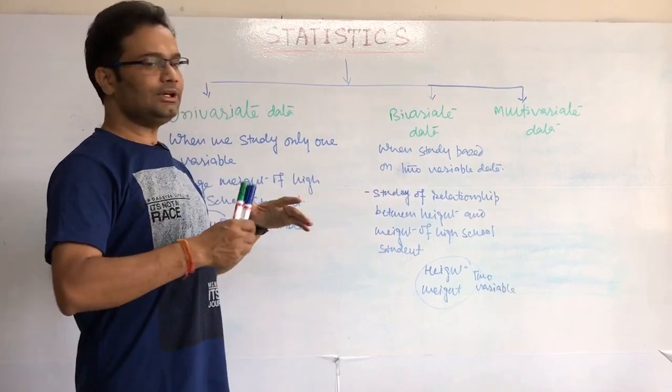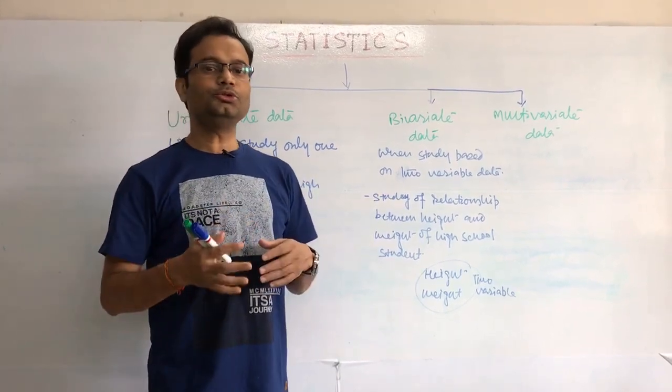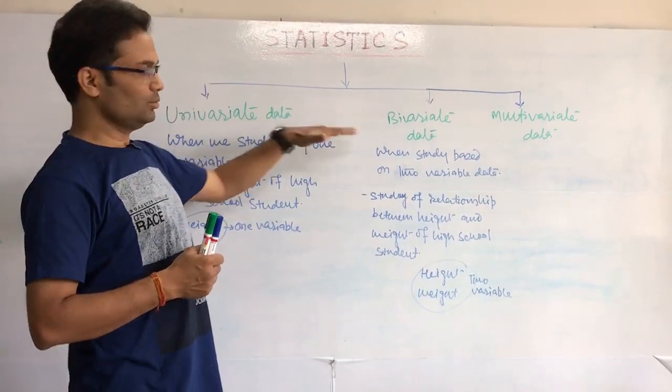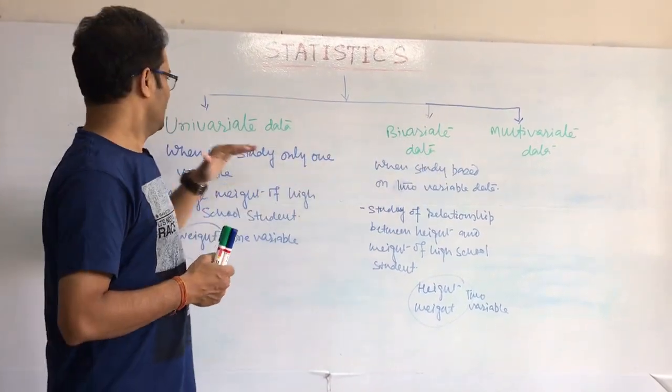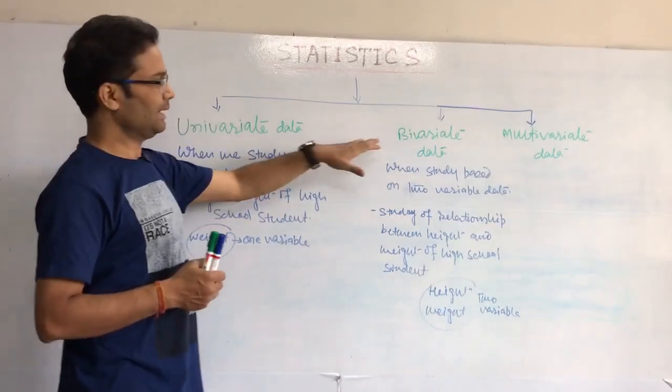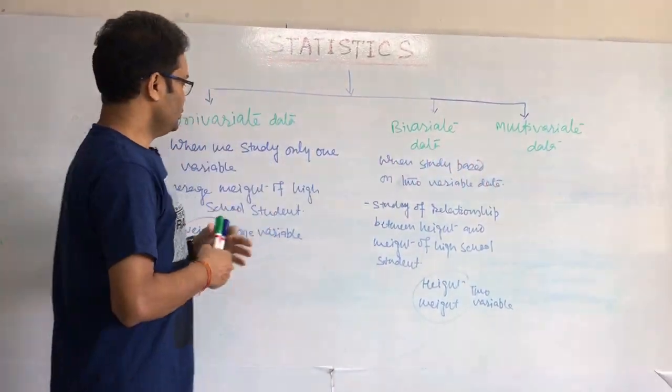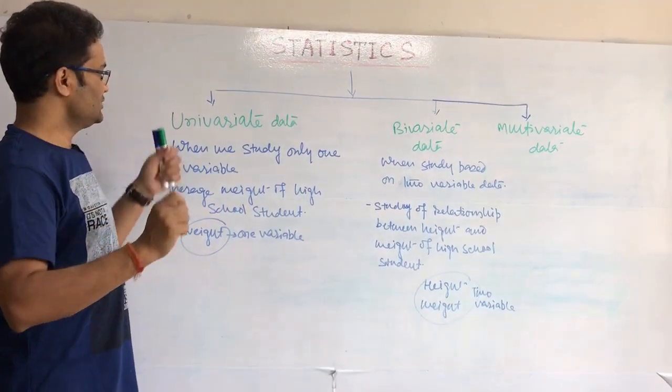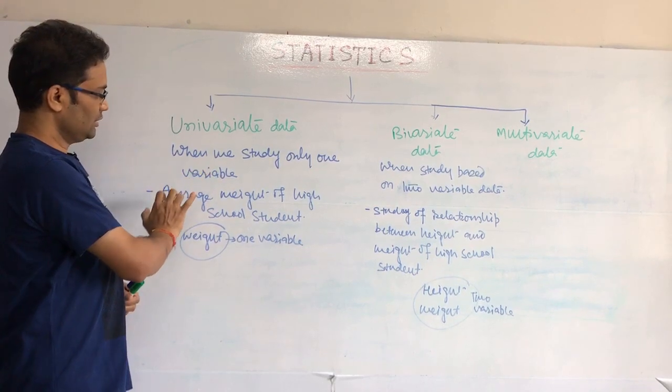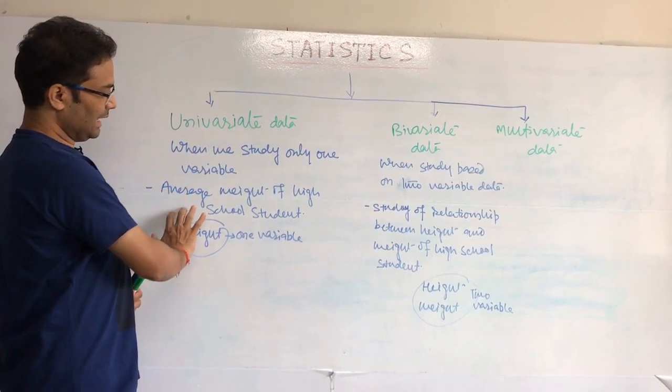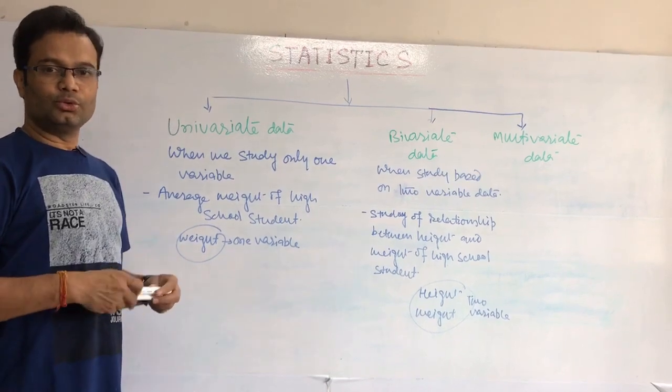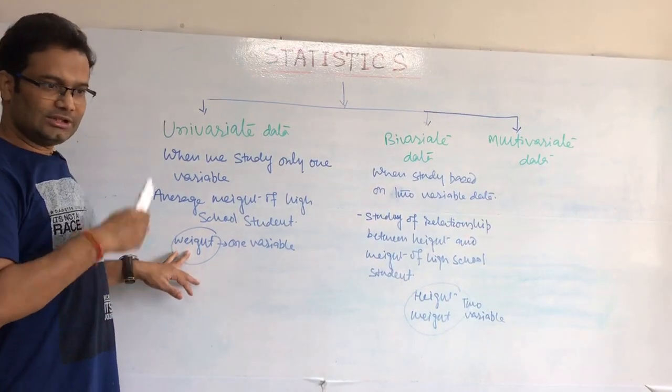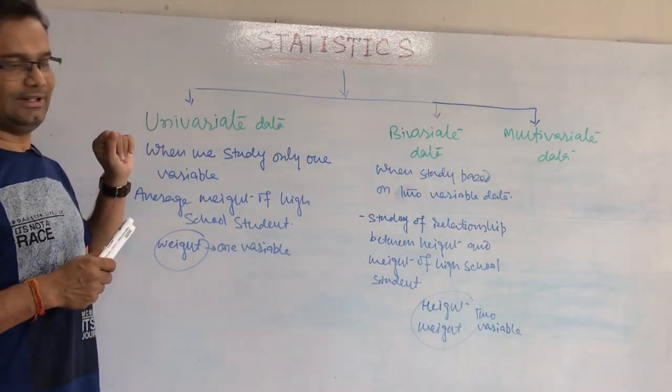Based upon how many data we are going to use for our study purpose, on that basis we can differentiate into 3 main categories. One is univariate data, bivariate data, multivariate data. If we use one variable for our study purpose, that is called univariate. Suppose you want to know what is the average weight of high school students. We are considering only one variable, that is called weight. This kind of data is called univariate data.